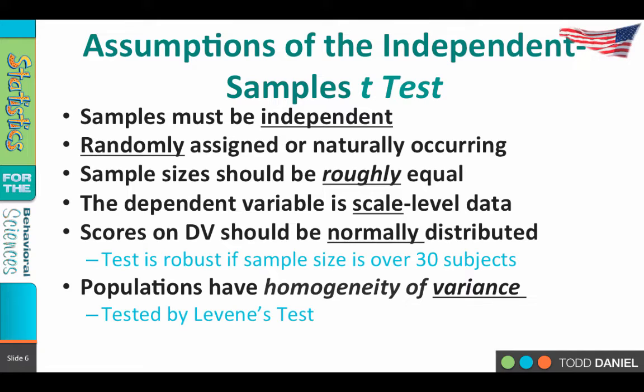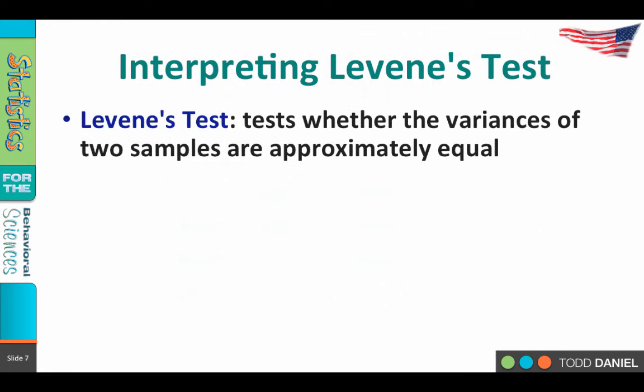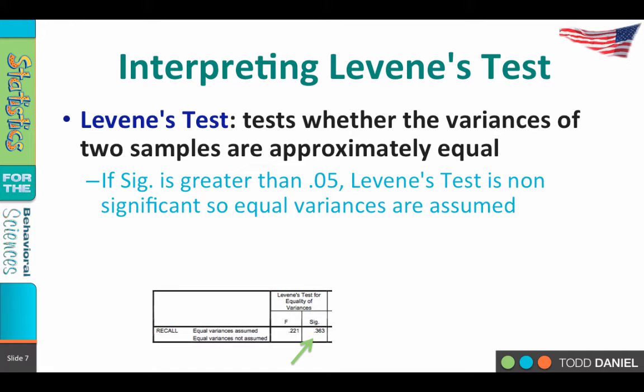How do we know if that assumption holds? There is a test called Levene's test that will allow us to determine whether the variability in one group is approximately the same as the variability in the other group. Levene's test tests whether the variances of two samples are approximately equal. Now remember, this is our assumption — we are assuming the variances of the two samples are approximately equal. We need to trust but verify, so SPSS runs Levene's test for us, and we interpret it based on its significance.